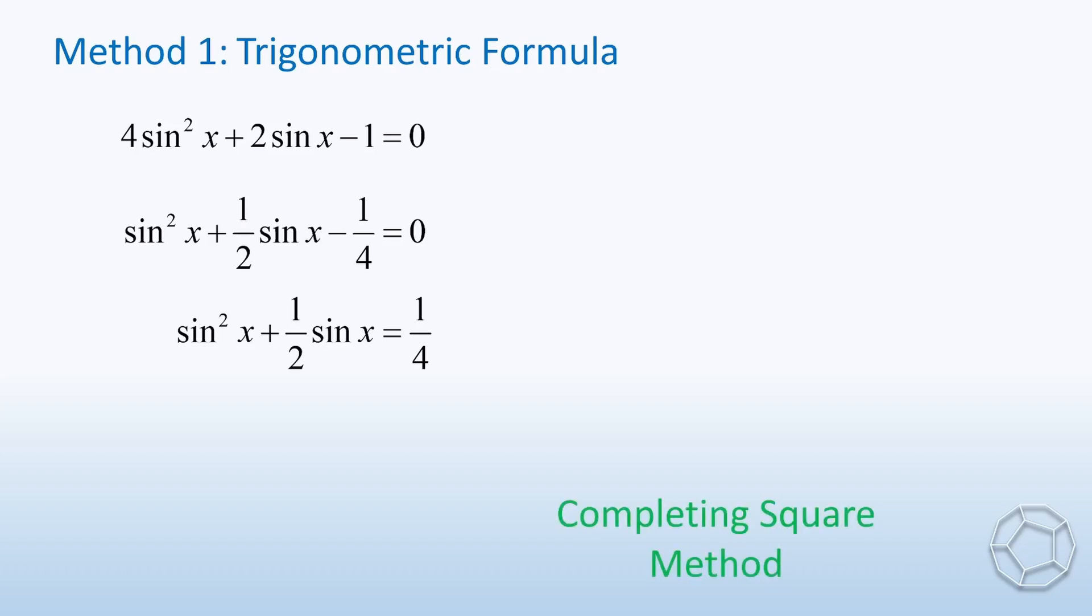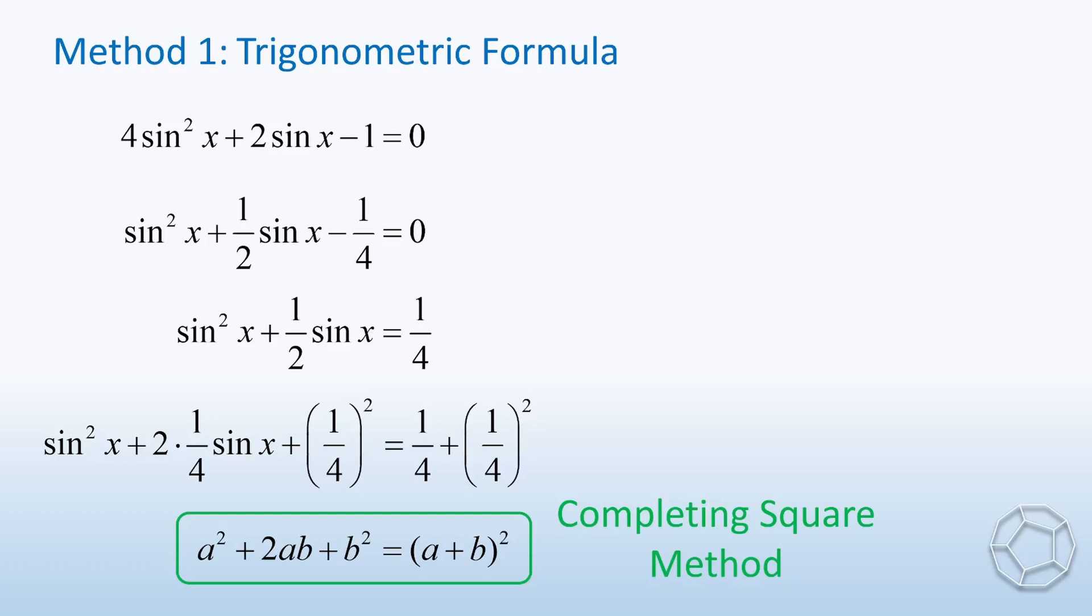How does it work? If we write the second term as 2 times 1 over 4 sine x, then the left-hand side looks like a square plus 2ab. We just need to add the b square to make a perfect square. In this case, we add 1 over 4 whole square on both sides. Then, the left-hand side is factorized as sine x plus 1 over 4 whole square, and the right-hand side is equal to 5 over 16. Actually, this is also the method to prove the quadratic formula.